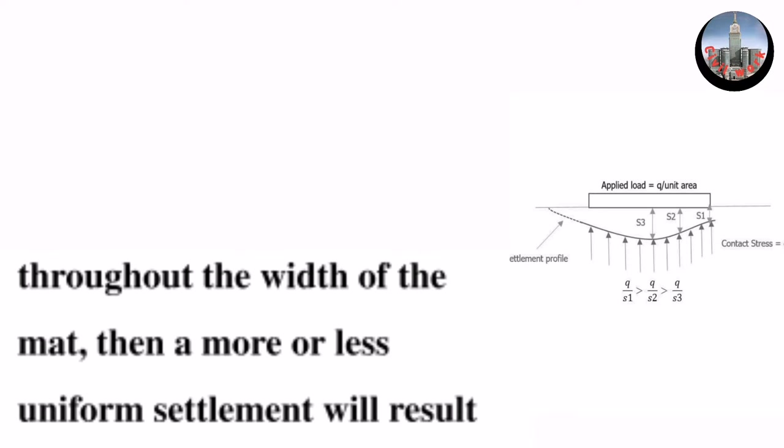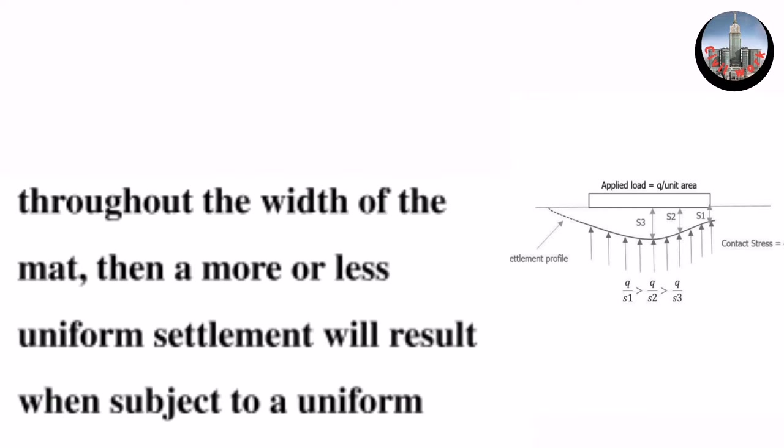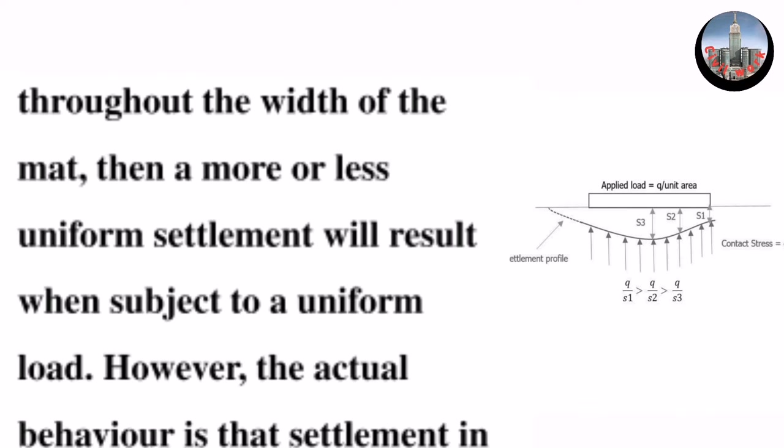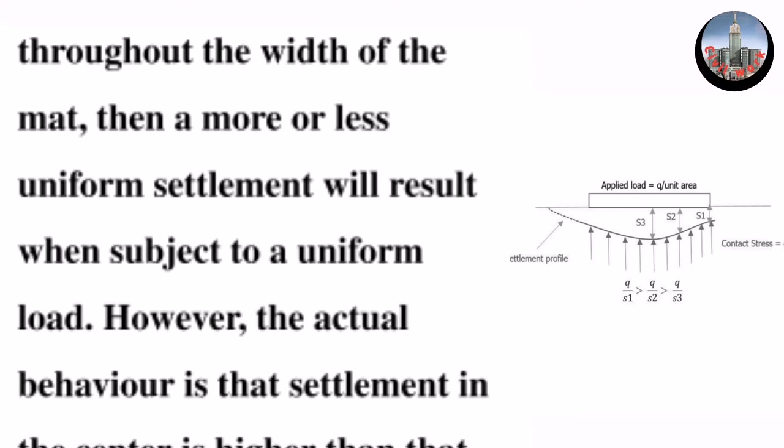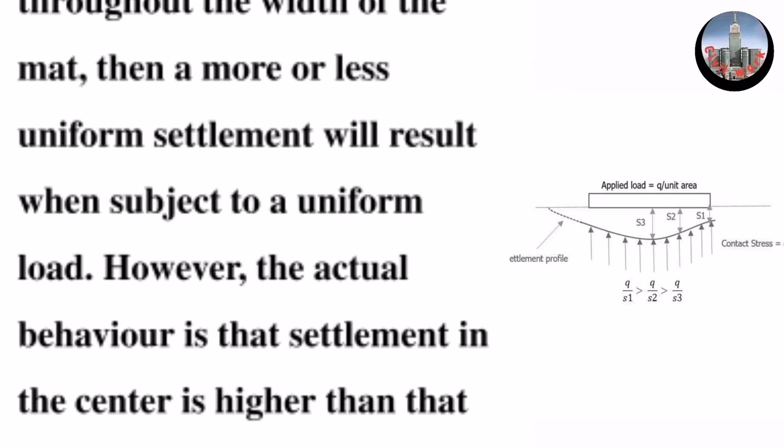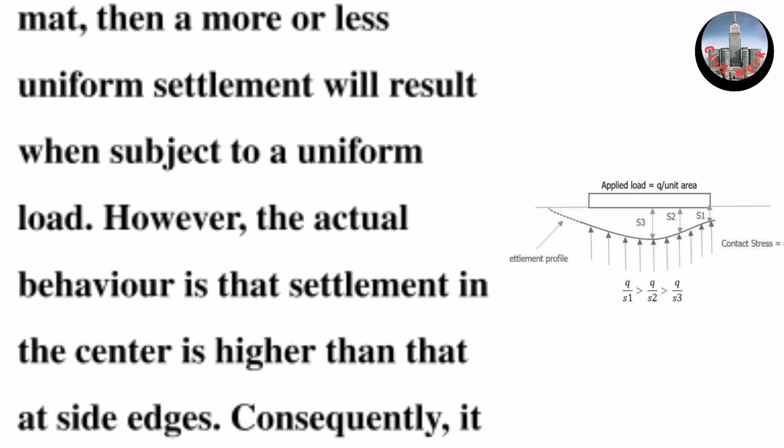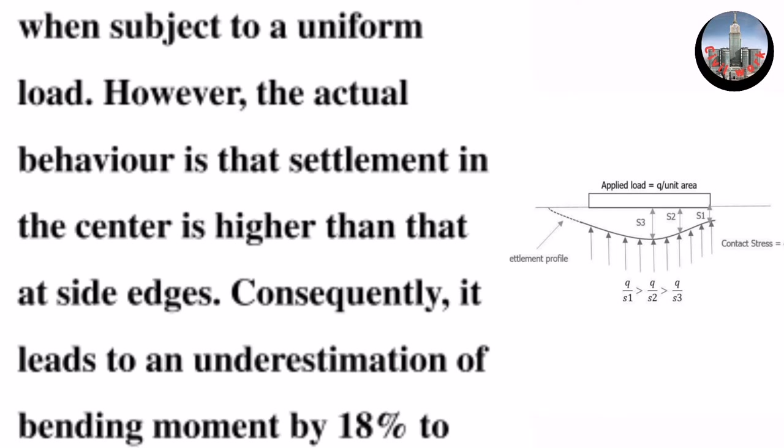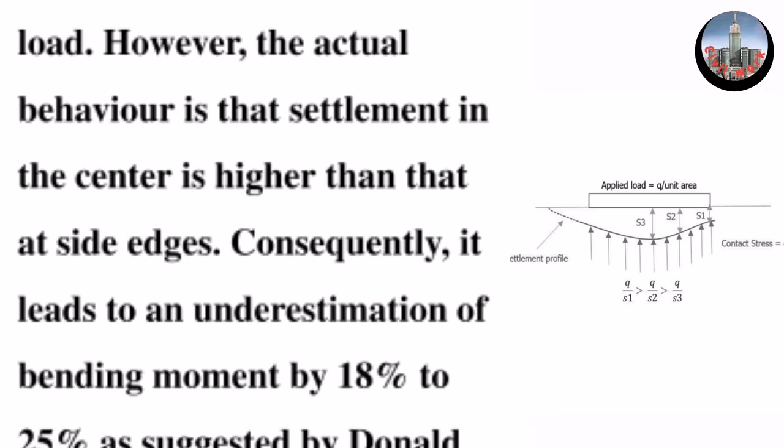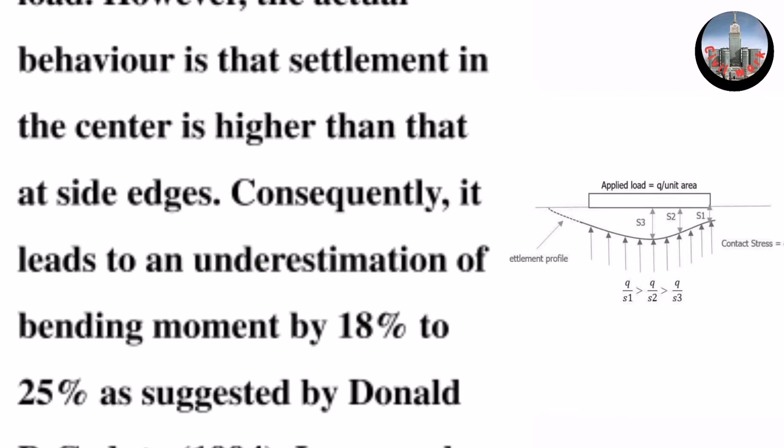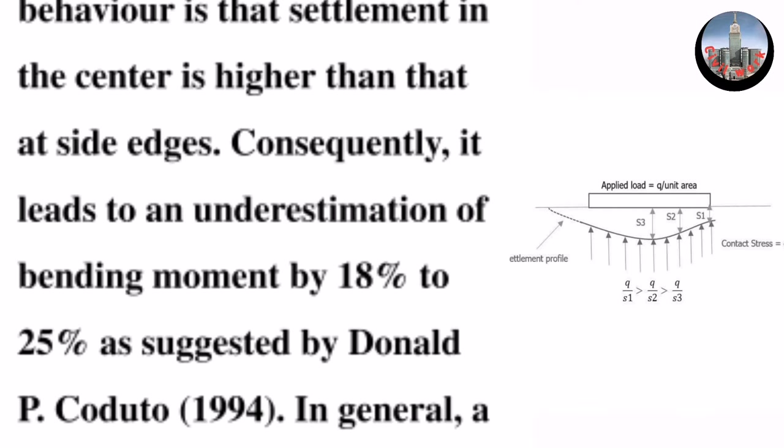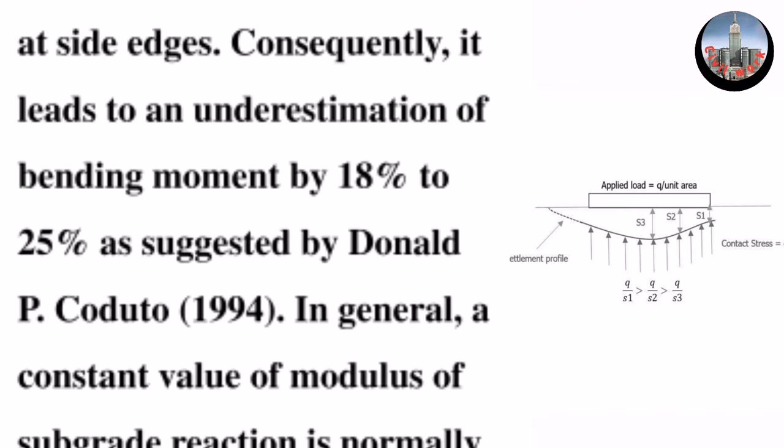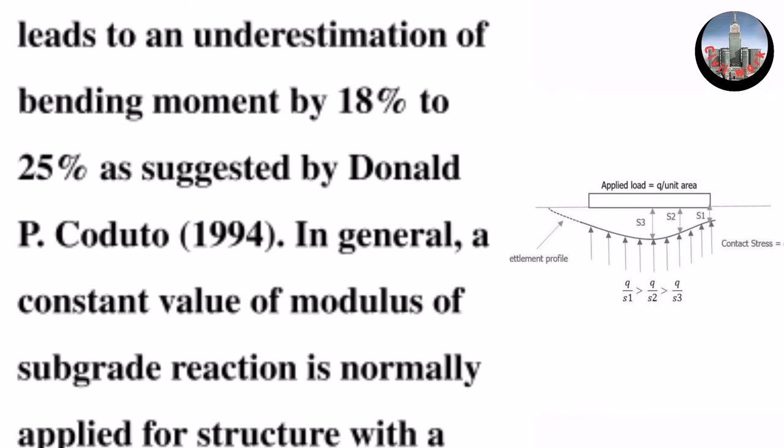then a more or less uniform settlement will result when subject to a uniform load. However, the actual behavior is that settlement in the center is higher than that at side edges. Consequently, it leads to an underestimation of bending moment by 18% to 25% as suggested by Donald P. Coduto, 1994.